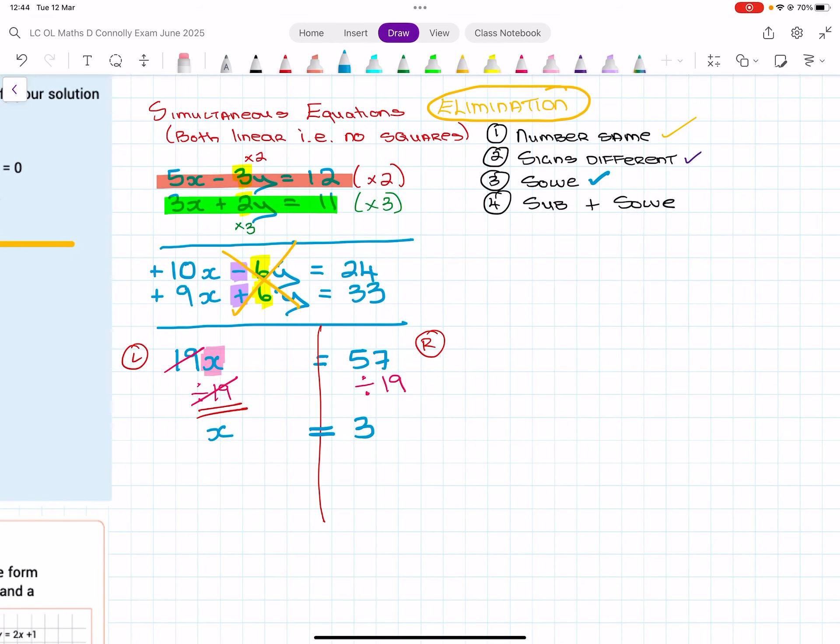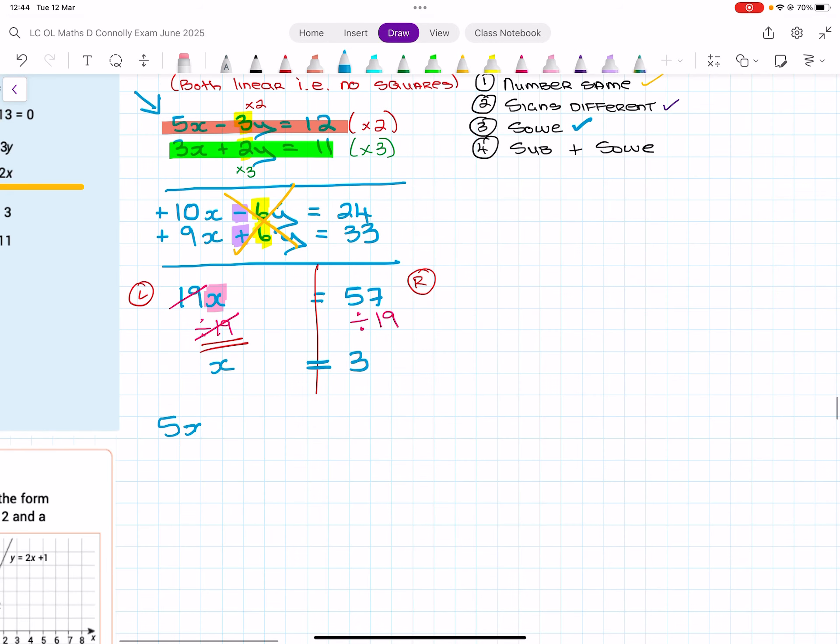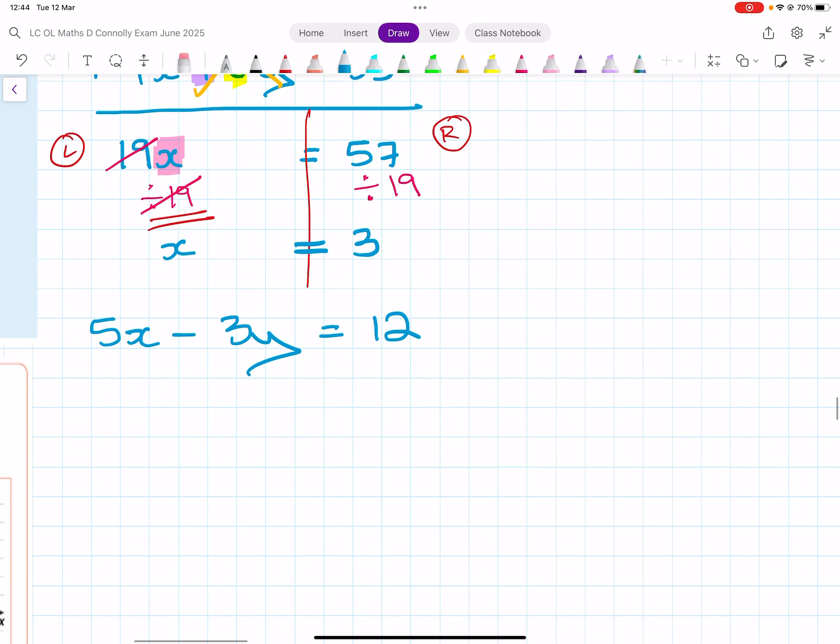The last step then is sub and solve. And that is where we take the first equation at the very beginning. So up here, the very first equation, which is 5x minus 3y equals 12. And I'm going to take the value that I just figured out, and I'm going to sub it in the correct place. So we get 5 bracket 3 minus 3y equals 12.